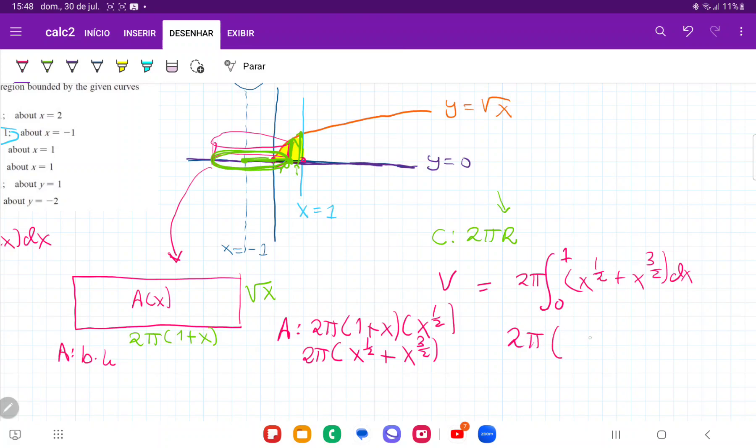So that's 2π times x to the 3/2 times 2/3 plus x to the 5/2 times 2/5, evaluated from 0 to 1. And now I don't need to worry about the lower boundary because it's just going to go to 0. So all I have to do is evaluate the upper boundary.